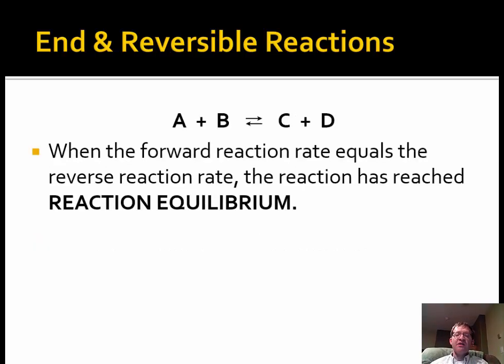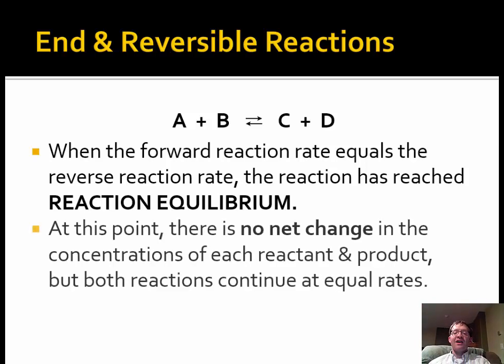We call this reaction equilibrium when the forward reaction rate is equal to the reverse reaction rate. They're canceling each other out. You wouldn't see any net change if you're measuring the amount of C and D or A or B present. As soon as A and B make product then those products turn back into reactants and the reaction's canceling itself out. At that point there is no net change in the concentrations or amounts for each reactant or product, but both the forward and the reverse reaction will continue at equal rates.